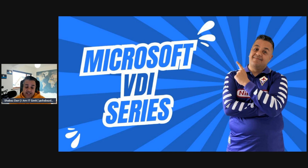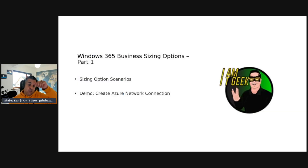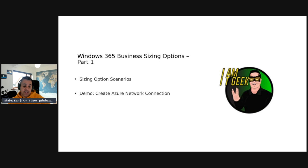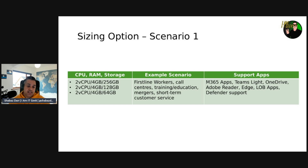This is the Microsoft Cloud VDI series and today is part one of the sizing options for Windows 365 Business. We're going to talk about sizing option scenarios and I'll do a bit of a demo. One of the prerequisites is creating an Azure network connection, which I'll also cover in the demo. We'll talk about two scenarios in this episode, and scenarios three and four will be covered in part two, which is video four.